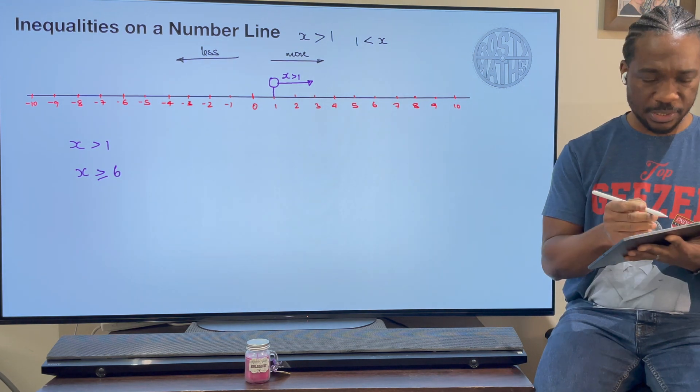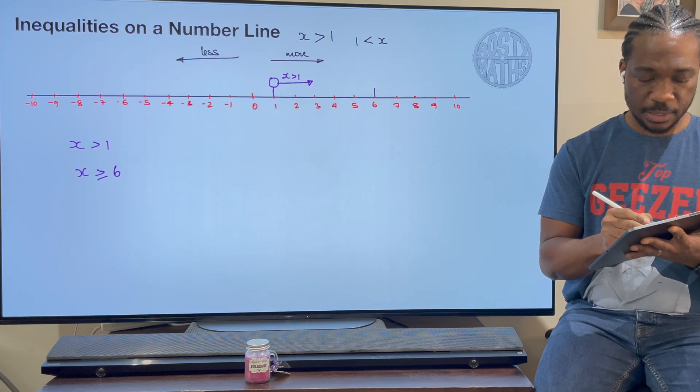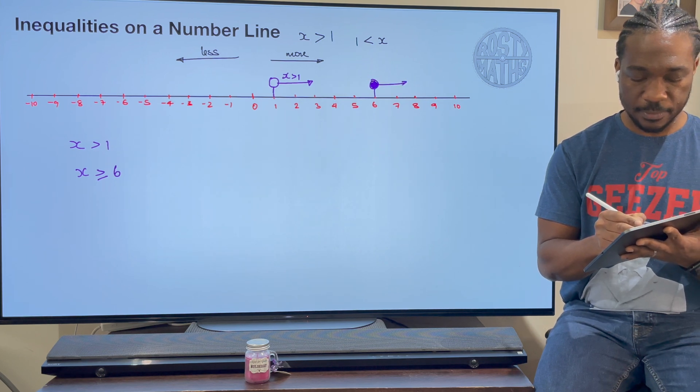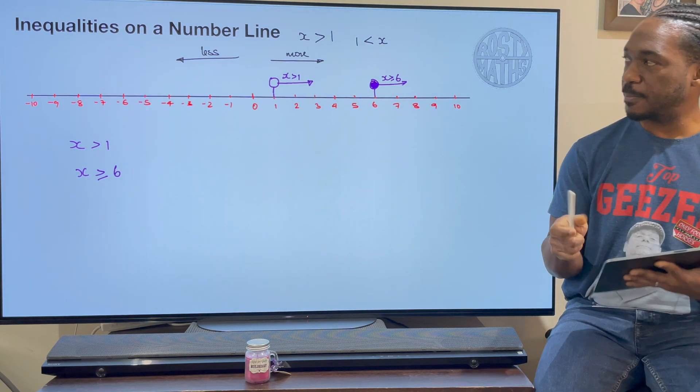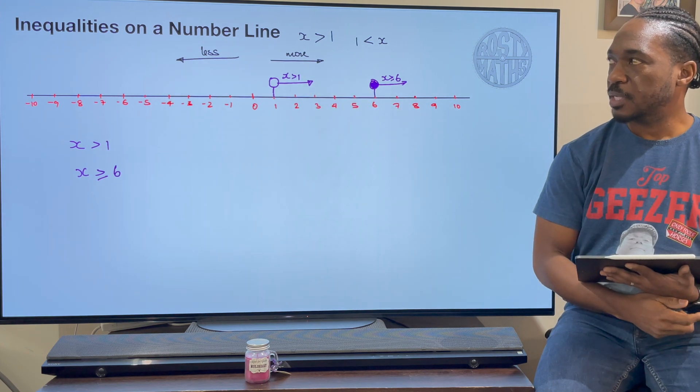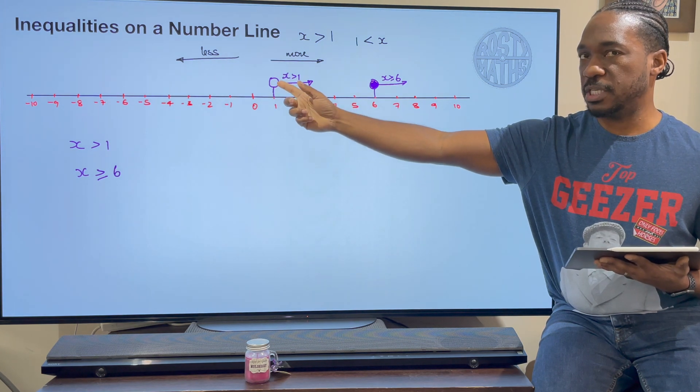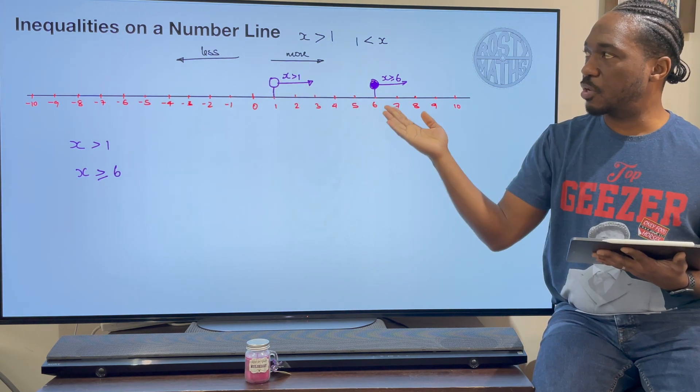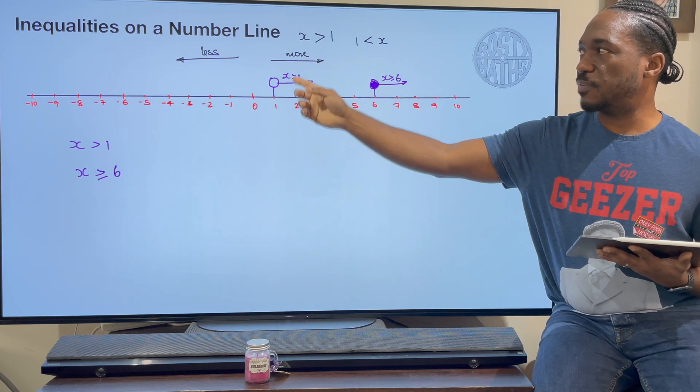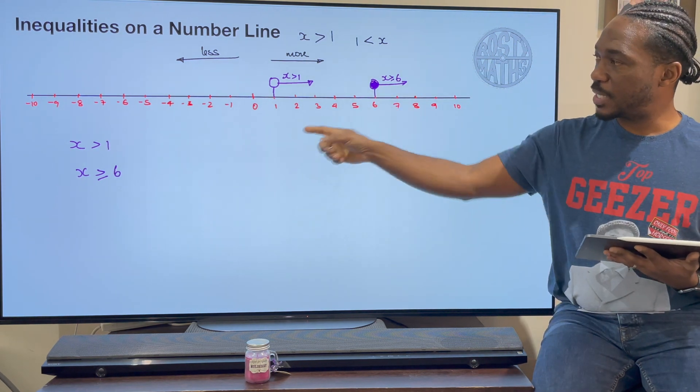What about this one? X is greater than or equal to 6. What's that mean? Well, let's have a look. So 6 is there. So x is greater than or equal to 6, but this time I'm going to color this in. X greater than or equal to 6.